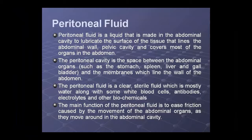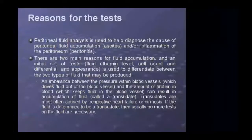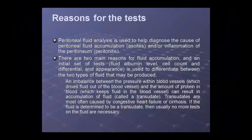The main function of peritoneal fluid is to reduce friction among the abdominal organs such as stomach, spleen, liver, and gallbladder, which are all present in the abdominal cavity. It reduces pressure and friction within the abdominal cavity. Accumulation of peritoneal fluid is known as ascites.